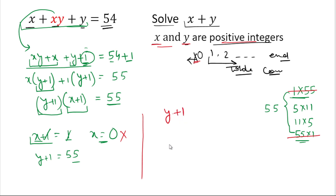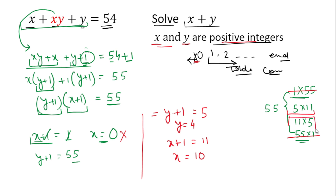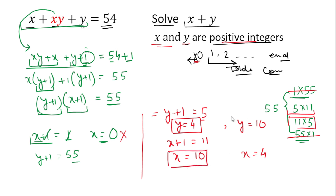Our next option is y plus 1 equals 5 and x plus 1 equals 11. So the value of y is 5 minus 1, which is 4, and the value of x is 11 minus 1, which is 10. If we interchange and take 11 and 5, then y equals 10 and x equals 4. So we have two solution sets: x equals 10, y equals 4, or x equals 4, y equals 10.